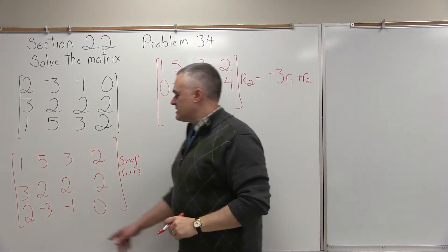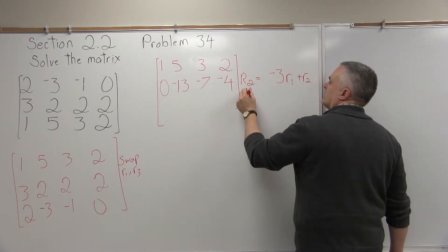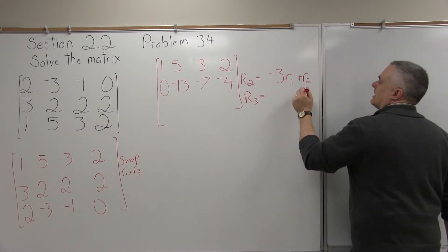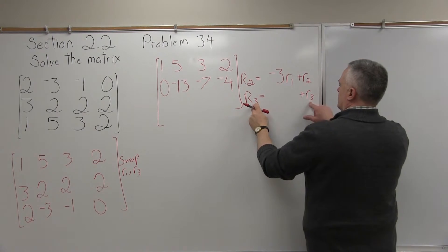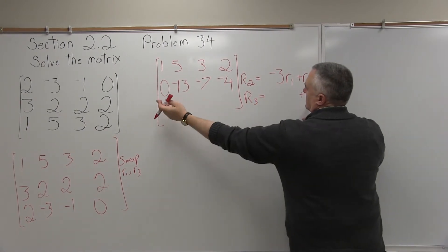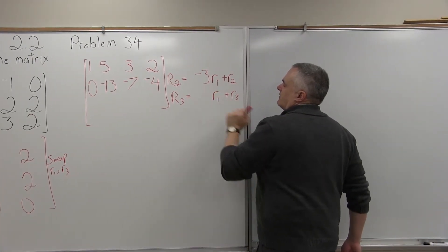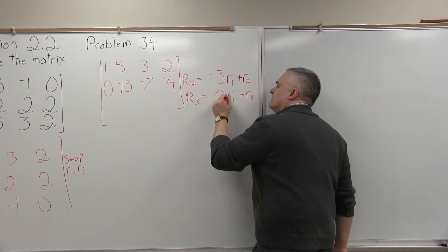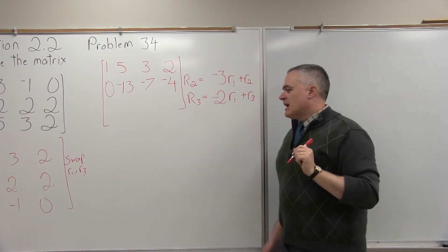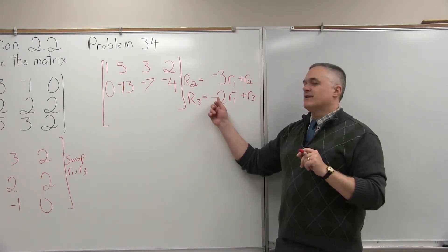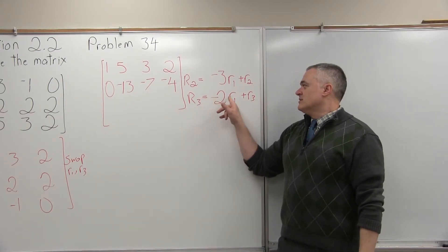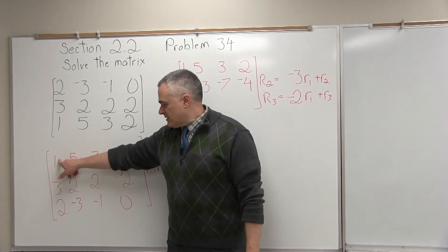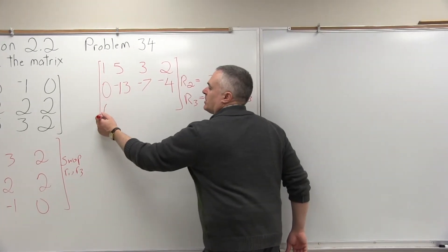Now I have to zero the other position, which is currently a positive 2 in row 3. I'll set up an equation to make that 2 turn into a 0. The equation starts with row 3, because that's the row we're making the 0: new row 3 = negative 2 times row 1 plus old row 3. Applying it: first position, negative 2 times 1 is negative 2, plus 2 equals 0.